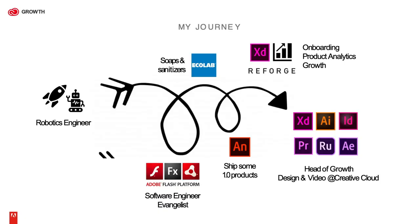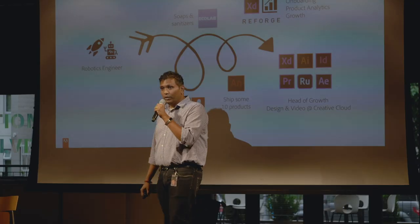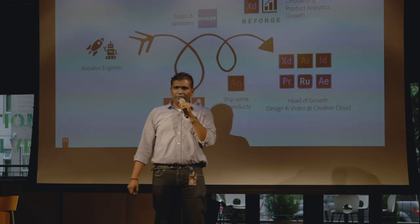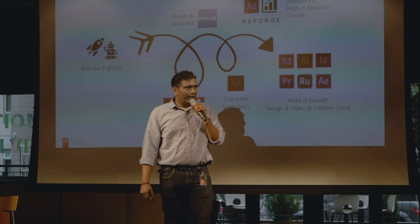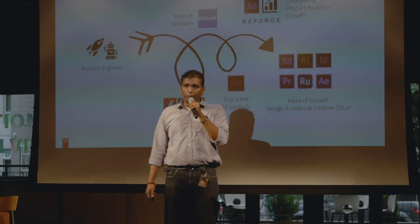My journey has been a little long and started off as a robotics engineer. That's what I wanted to do — build robots for a living. I wanted to get my master's in robotics, and I figured out that I didn't have any money. So I said, I'm going to take a couple of years off, work somewhere, make some money, and then do my master's. And that's how I ended up joining this small company called Macromedia as a software engineer for the Flash platform working on Flex.